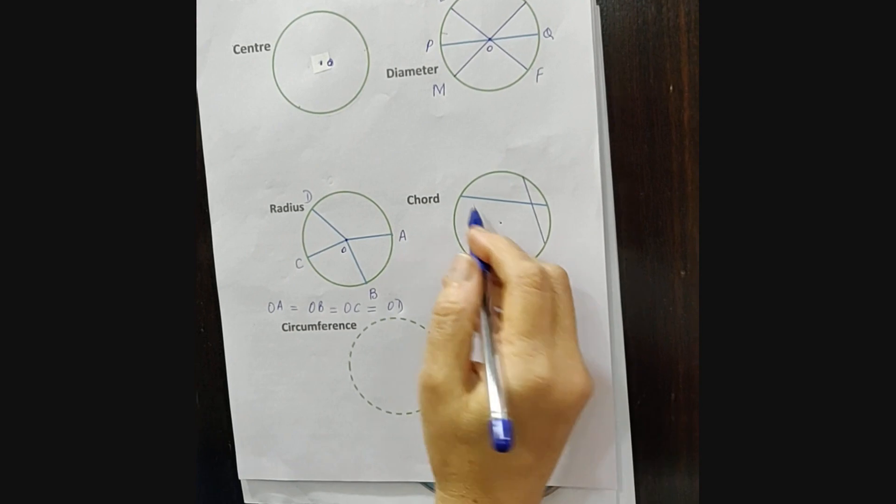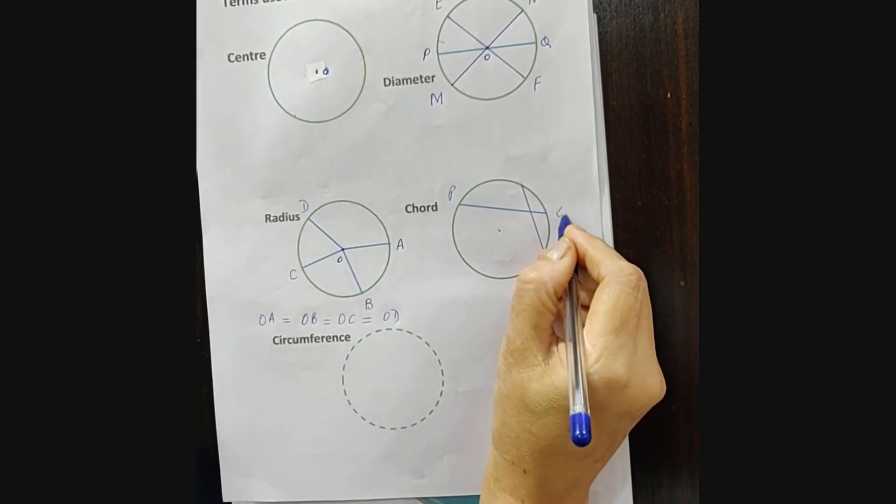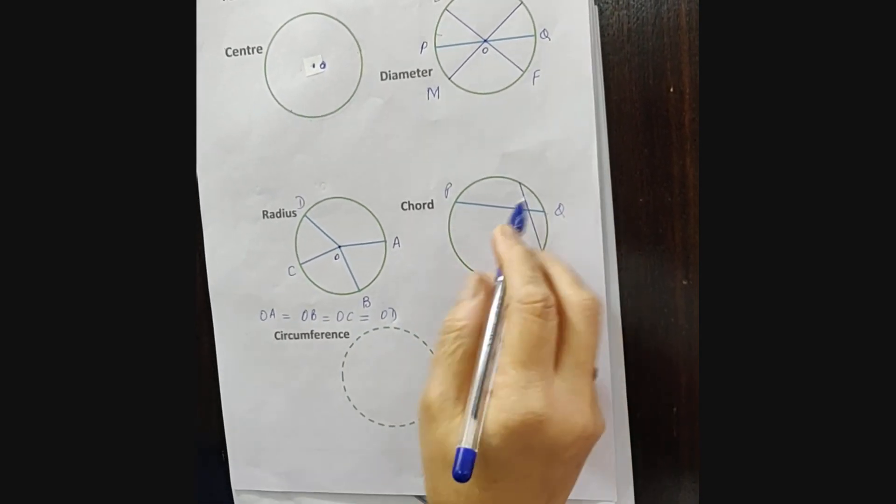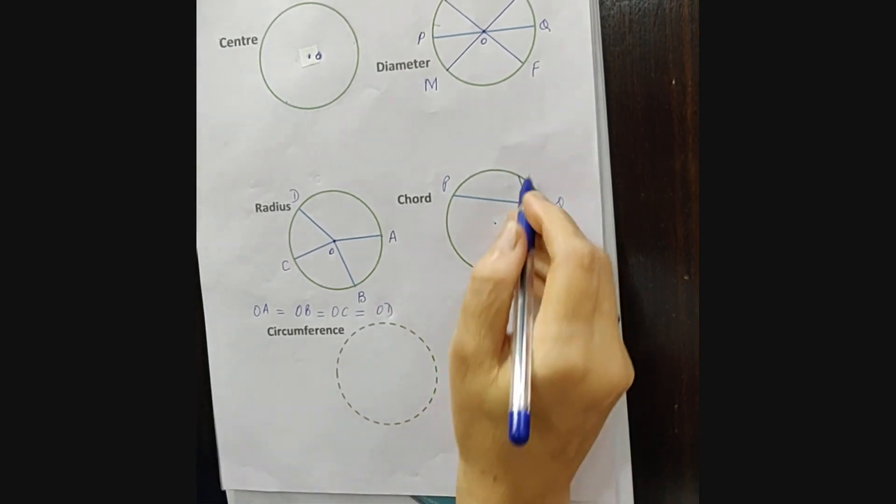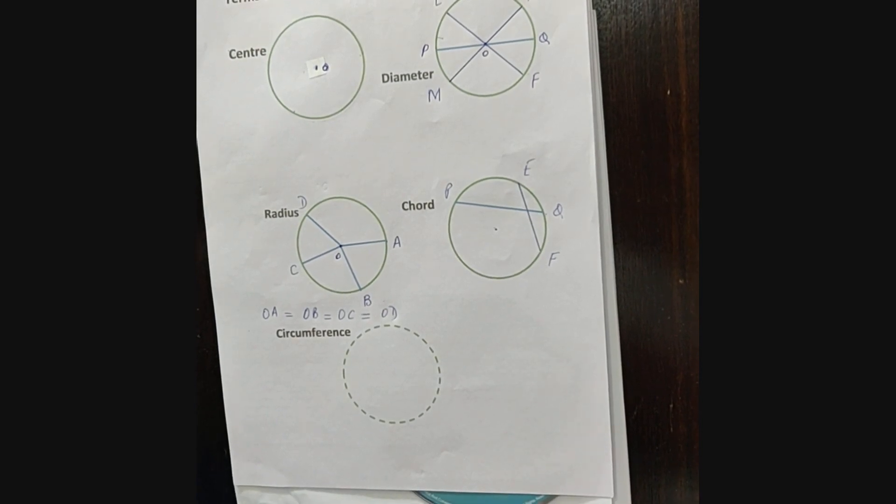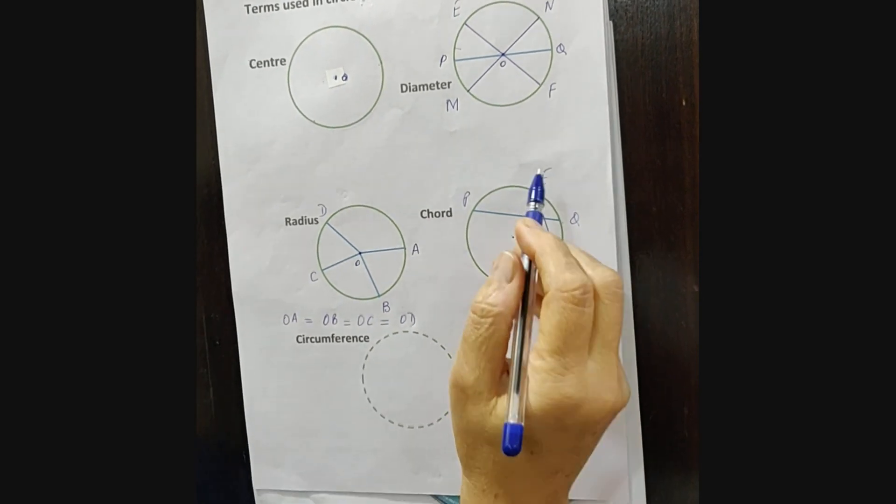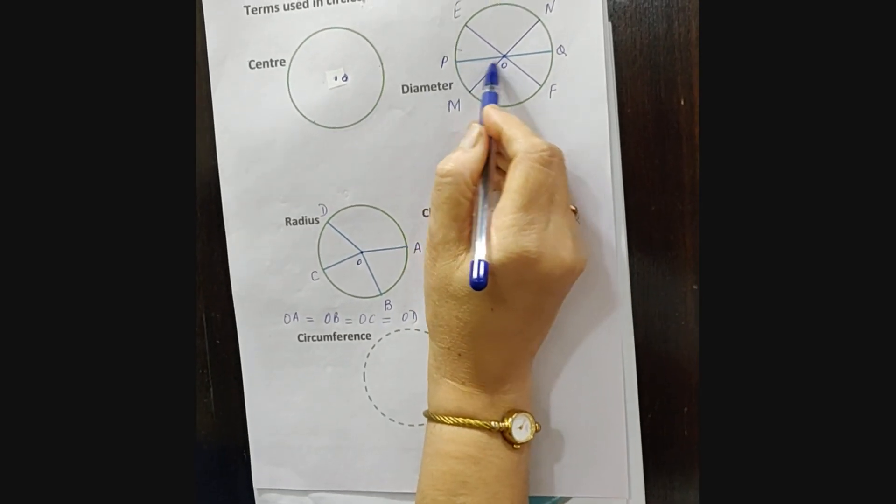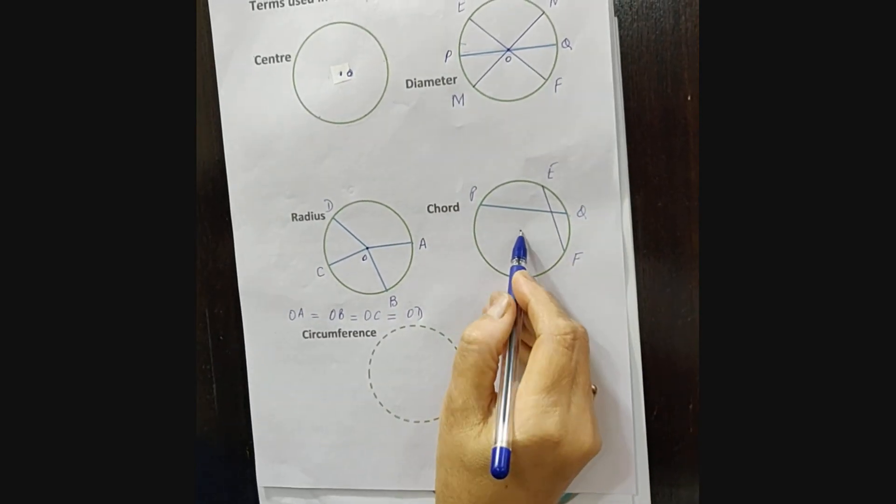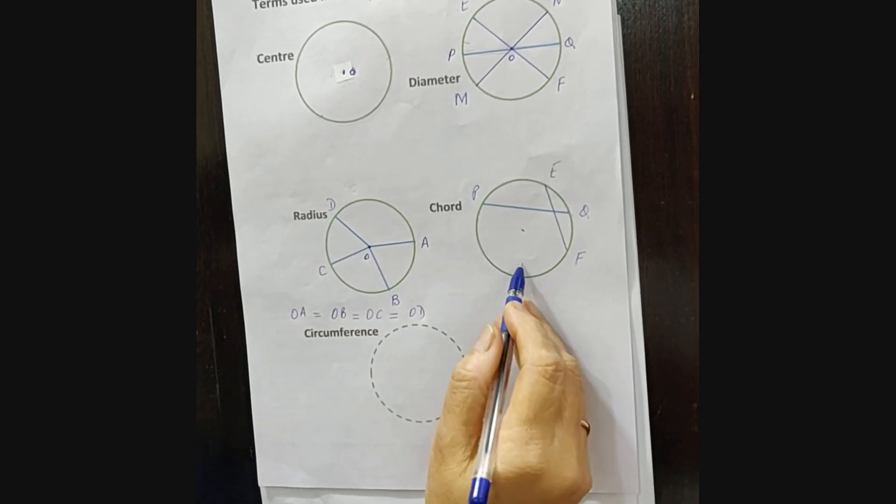Now next comes chord. When a line segment is drawn, suppose it is P and Q, on any two points on the circle, it is known as chord. We can draw infinite chords on the circle. There is a difference between chord and diameter. When a line segment passes through the center of the circle, it is called diameter. But when it does not pass from the center, it is called chord.